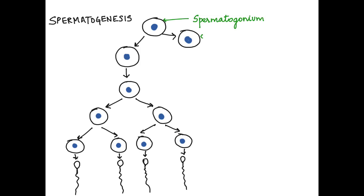It begins with the main cell, the spermatogonium. This spermatogonium undergoes mitotic division, giving rise to two spermatogoniums.